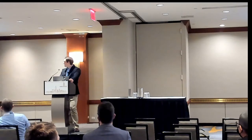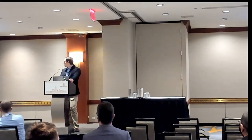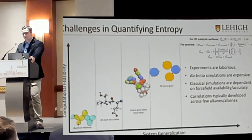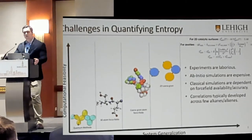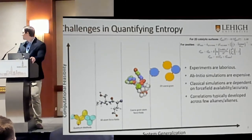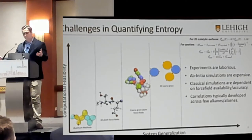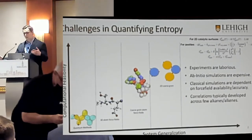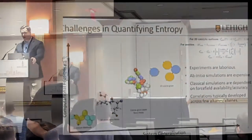The motivation behind this project comes from the fact that it's difficult to quantify the entropy. When it comes to experiments, there are values that typically span across several papers. And when it comes to simulating them, ab initio techniques take a lot of time. We can do ab initio MD, and we can correct a harmonic oscillator by doing quantum anharmonic corrections, but these are computationally expensive.